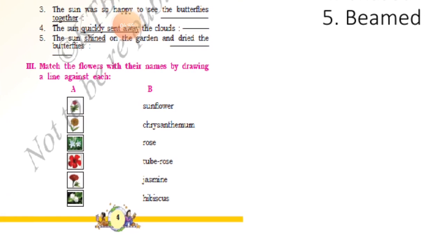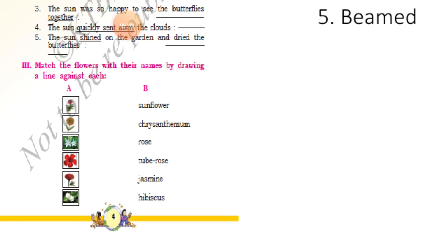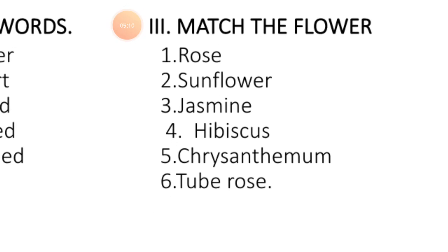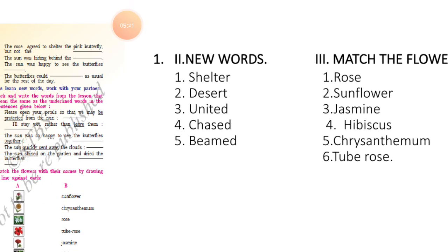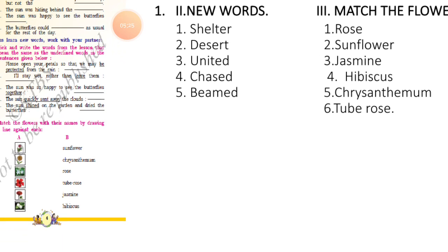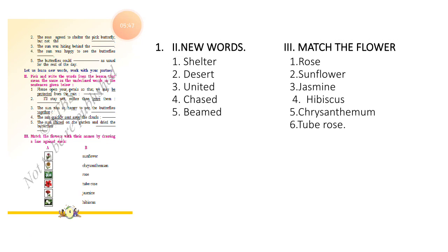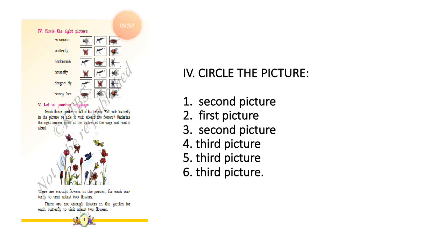Roman numeral three: match the following flower names. The first picture is rose, second is sunflower, third is jasmine, fourth is hibiscus, fifth is chrysanthemum, and sixth is tuberose. Just write the answers at the side — one, two, three, four. Don't draw lines for matching in English. I'm particular about this because you have to copy this in your homework.